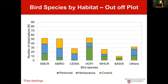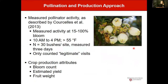For out-of-plot data — beyond the 50-meter radius — there were greater numbers of American crows and robins, relatively equally distributed among habitat treatments, except American robins and cedar waxwings were still very few in the perennial habitat. House finch were more present in perennial habitat. Barn swallows were very few in herbaceous and relatively equal in control and perennial. The take-home message from this first-year study is that species and their populations do vary by habitat, but we really don't have any recommendations at this time.